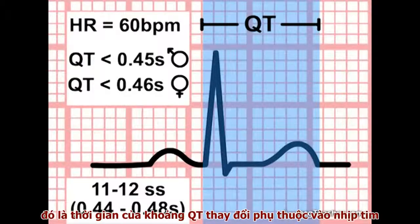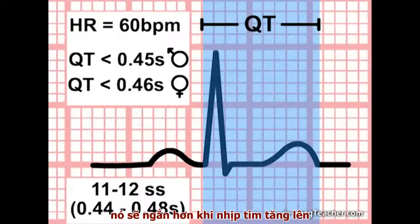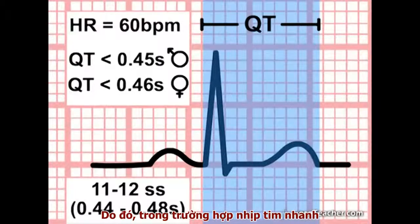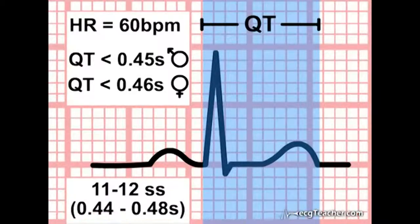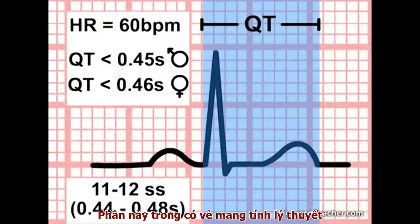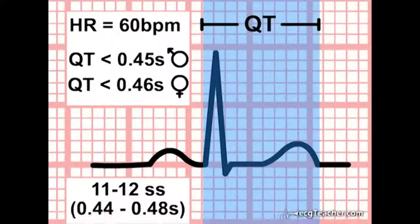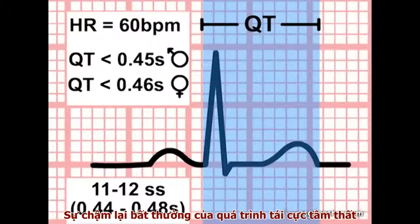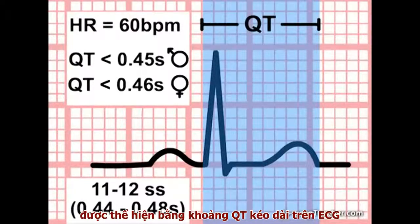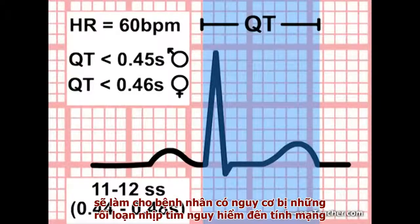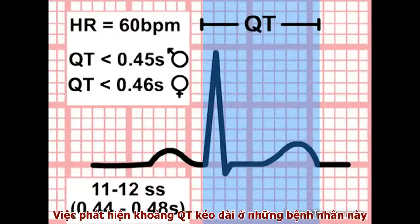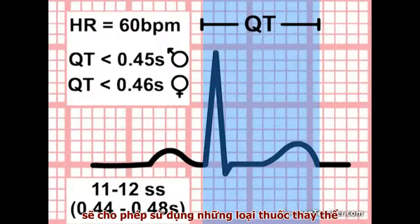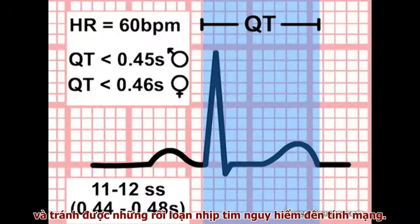The measured QT interval varies with heart rate, becoming shorter as the heart speeds up or longer when the heart slows down. Therefore, particularly at higher heart rates, it is possible to miss an underlying prolonged QT interval. Abnormally slow ventricular repolarization, evidenced by a prolonged QT interval on the ECG, places patients at risk of fatal arrhythmias when treated with certain commonly used drugs. The ability to identify prolonged QT in these patients can lead to the use of alternative medications and avoidance of sometimes fatal arrhythmias.